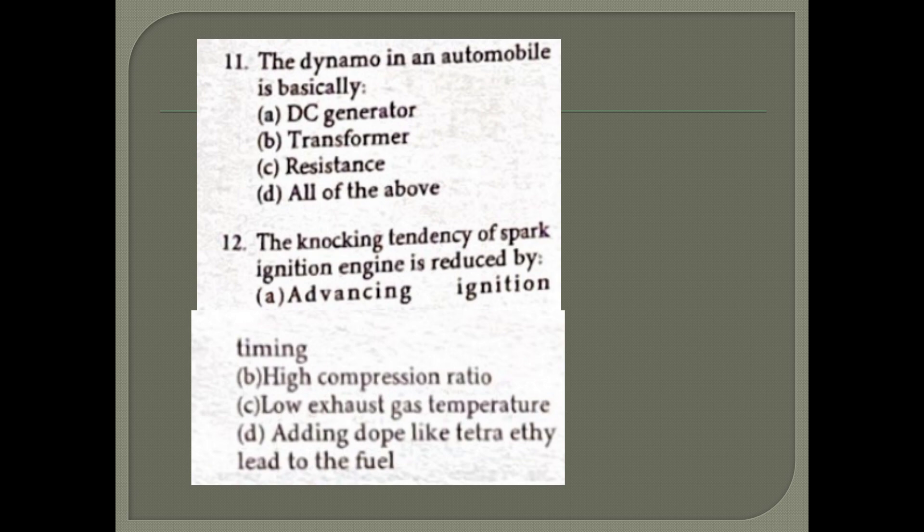The dynamo in an automobile is basically... Next question: The knocking tendency of a spark ignition engine is reduced by advancing ignition timing, high compression ratio, low exhaust gas temperature, or adding dope like tetraethyl lead to fuel. Option D - adding dope like tetraethyl lead to fuel.